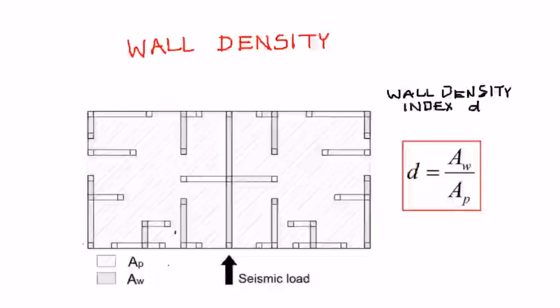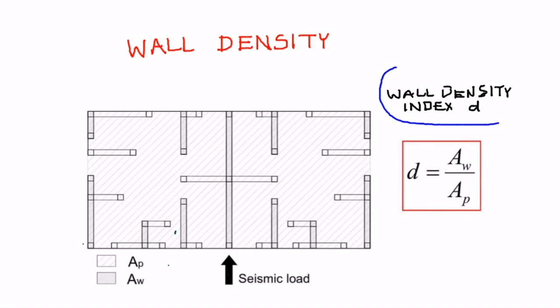Wall density is considered to be one of the key indicators of seismic safety of a confined masonry building. This has been proven in several earthquakes, particularly in Latin America, where researchers have studied wall density of buildings that performed well and ones that were more significantly damaged. Wall density can be defined as the amount of walls in one direction of the building relative to the plan area, and it is usually expressed in terms of wall density index d.